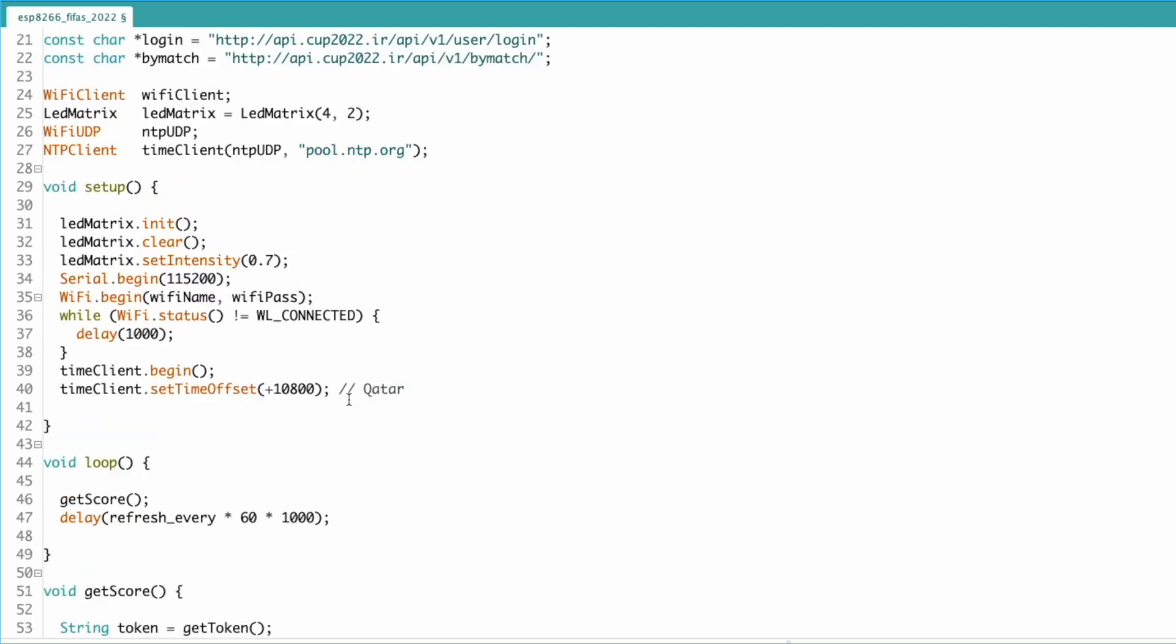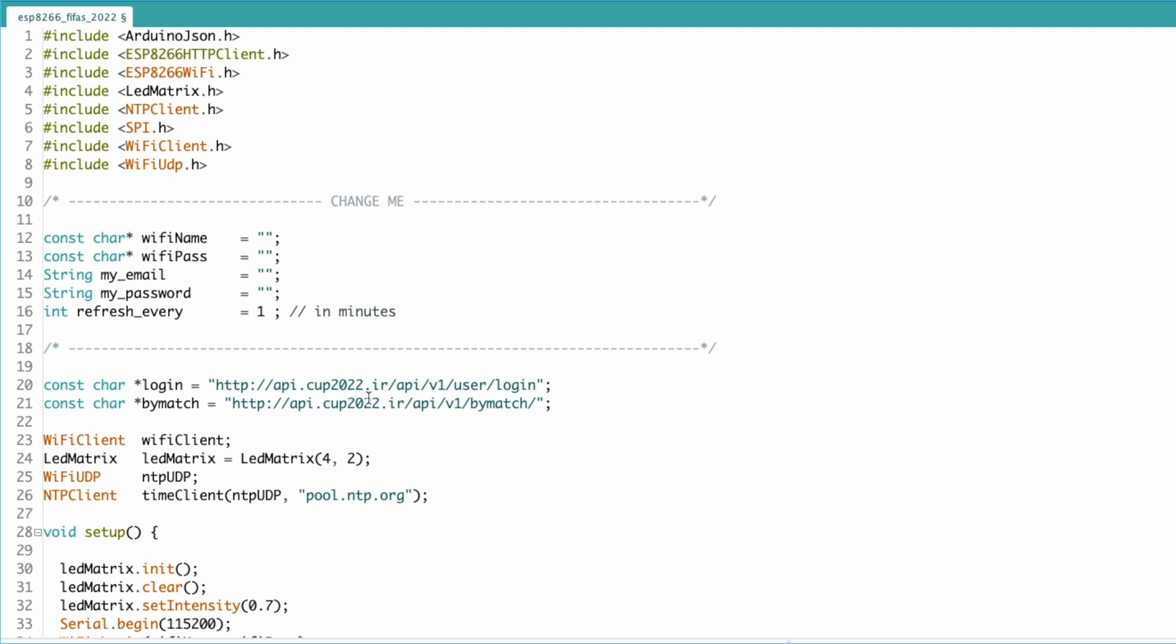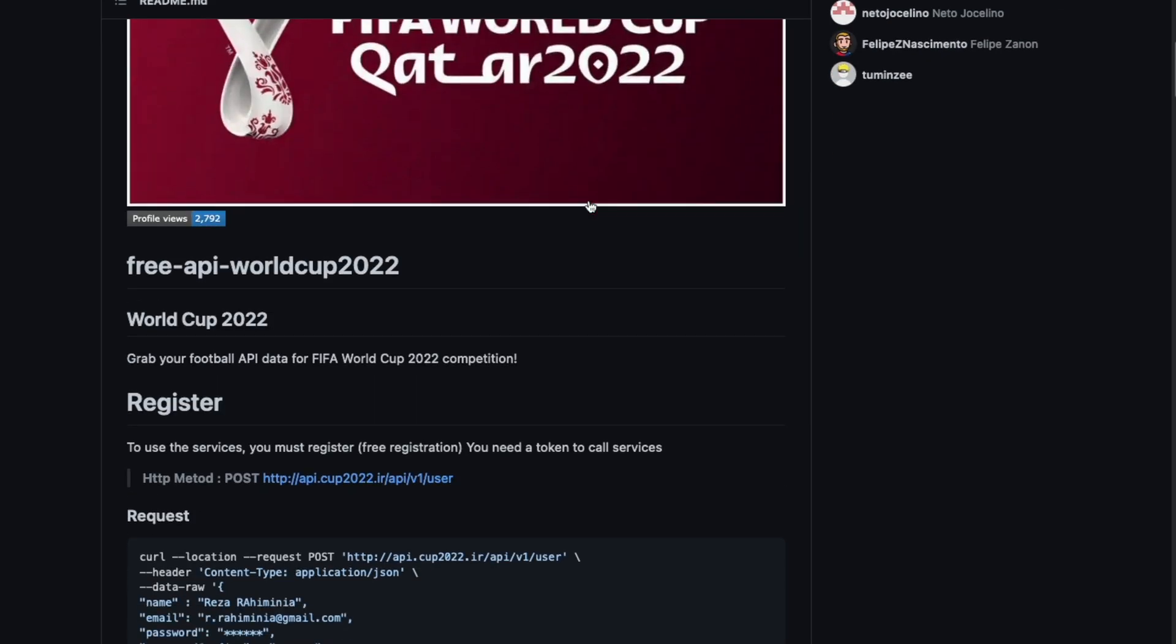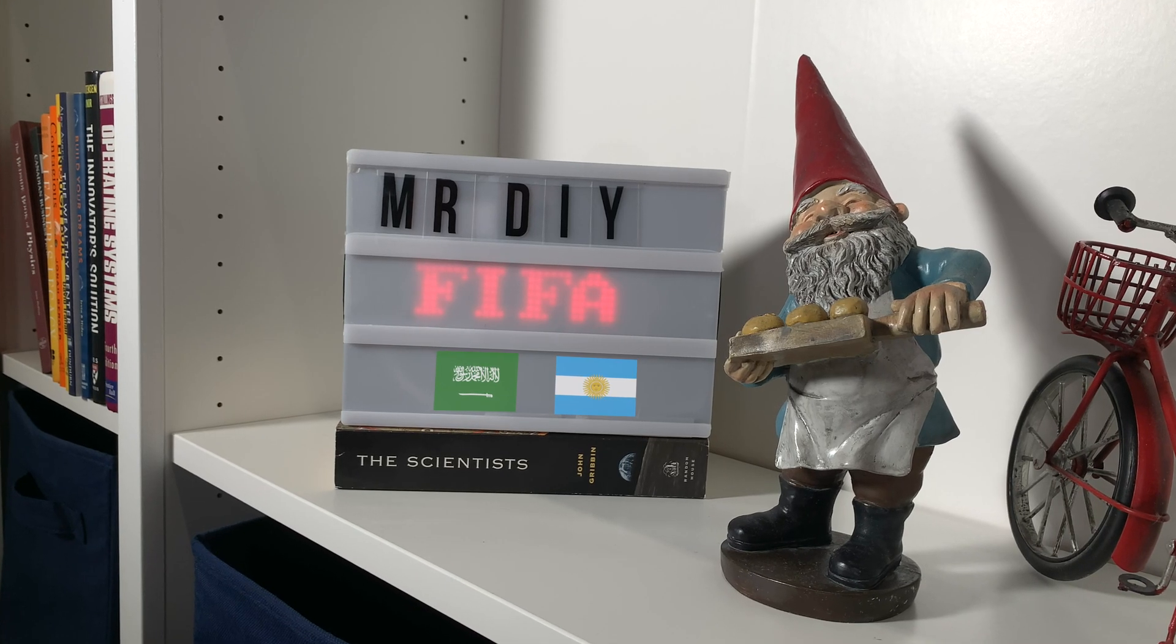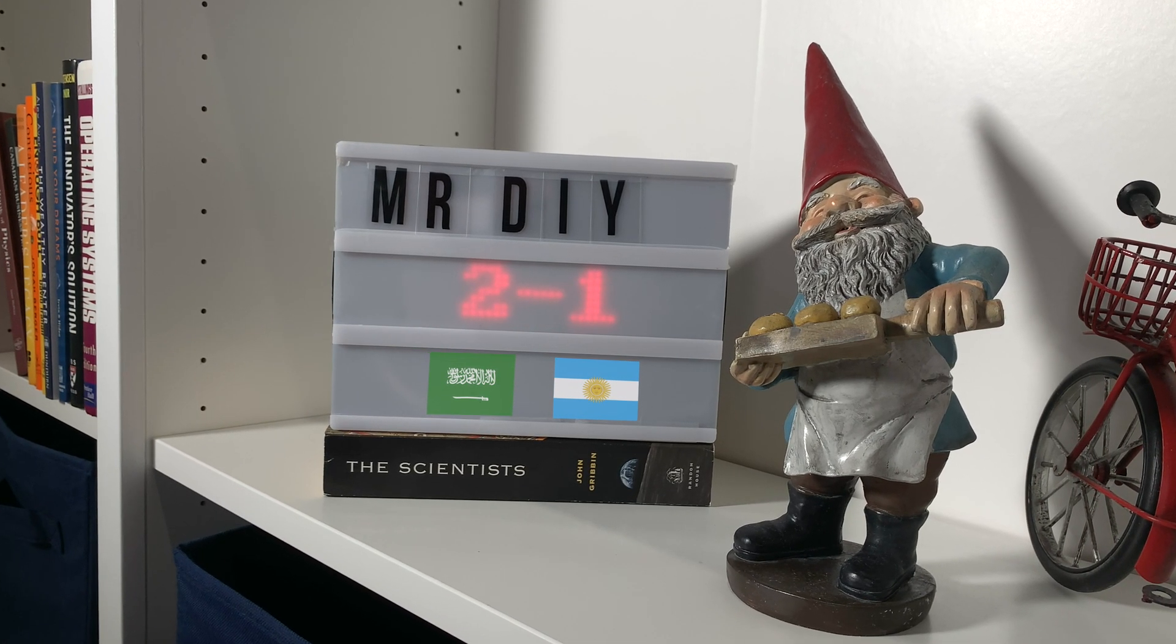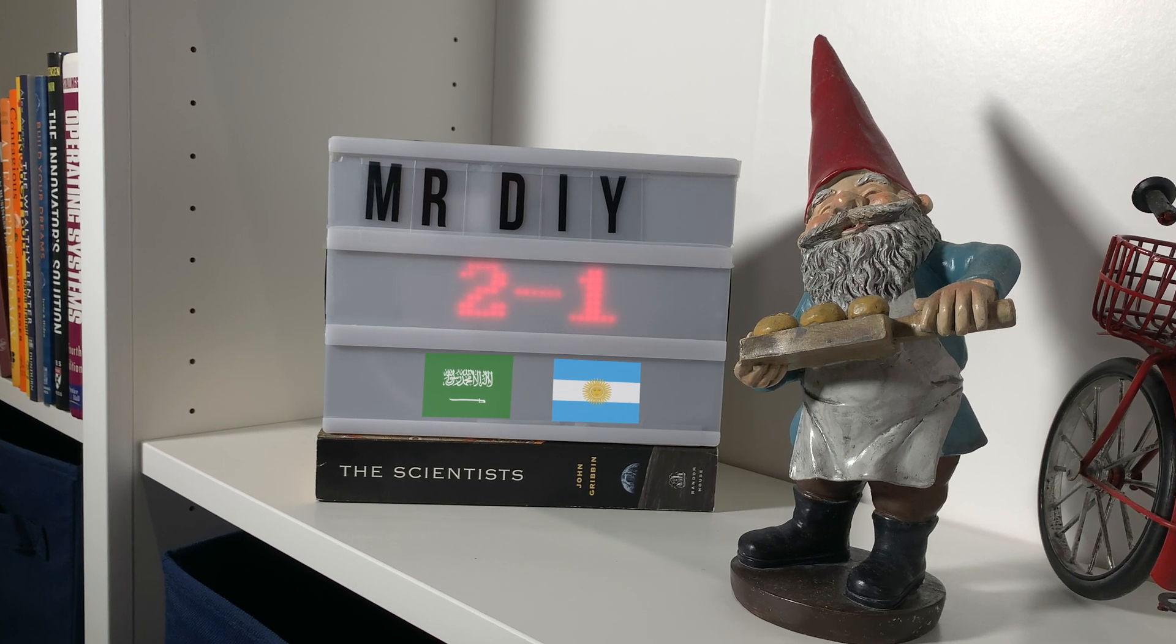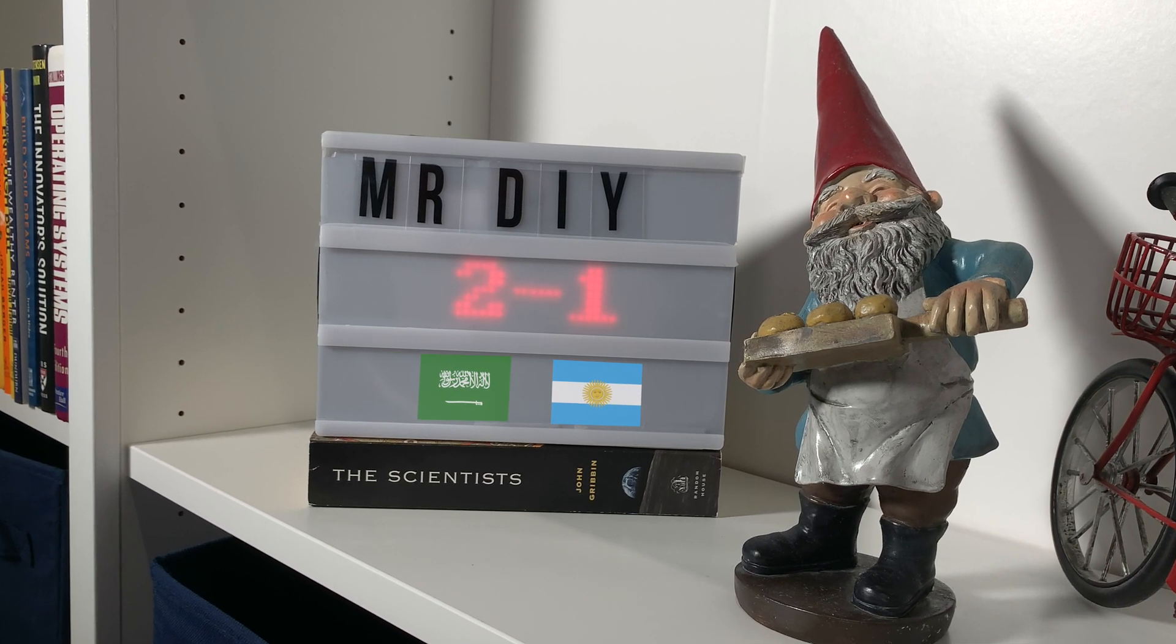And that's the whole device in a nutshell. I'll leave the link to the source code and the API documentation down below. The code is by no means perfect—it's a starting point, so use it as you wish. And that was my quick overview of my FIFA display. So that's it for me. Thank you for watching, and go!